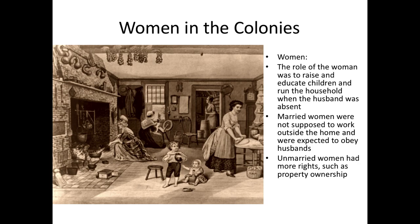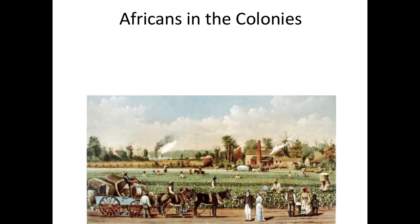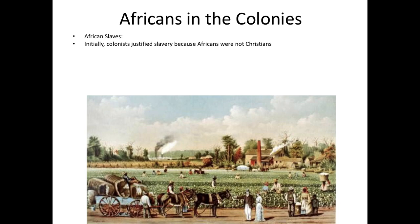The other major group I'll talk about will be African slaves. African slaves are going to exist in all of the 13 colonies, but much more so in the southern colonies. Initially, the enslavement of Africans was justified on religious grounds — the idea that if Africans aren't Christians, it's okay to enslave them. However, a lot of Africans converted to Christianity, and the slave owners didn't want to give up their slaves. So the wealthy planter class, which had all the power especially in the southern colonies, started changing the rules.